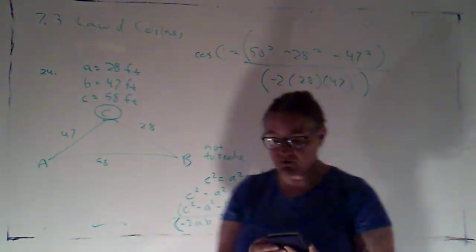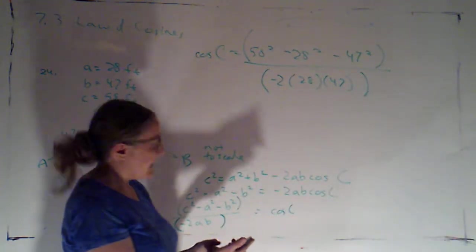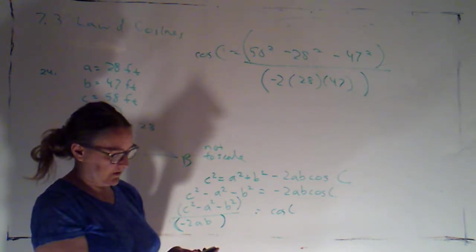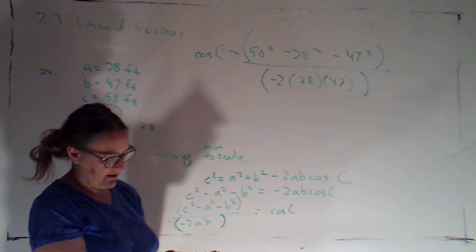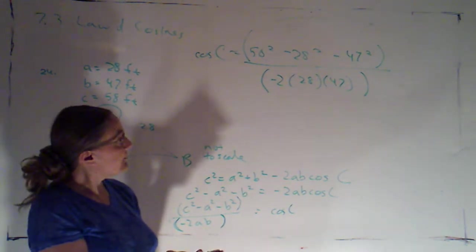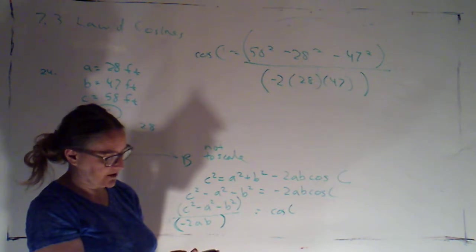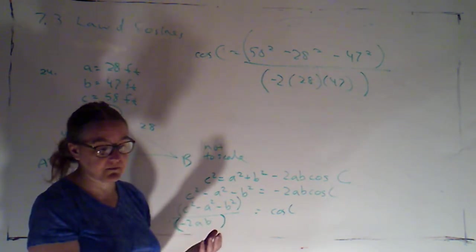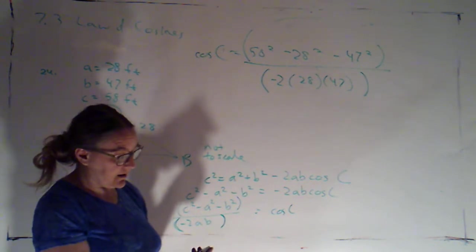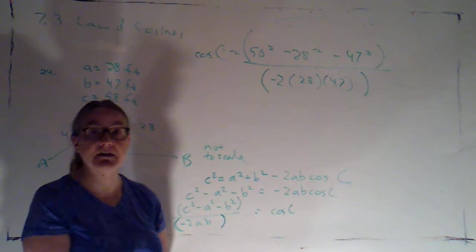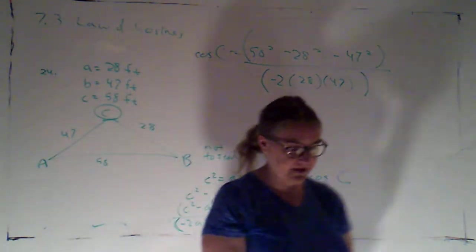Alright. So my calculator is still in degree mode. That's important. I'm going to type in 58 squared minus 28 squared minus 47 squared. I'm done with the top of the fraction, so I'm going to equal that out. Okay. Alright. And I have 371 here.